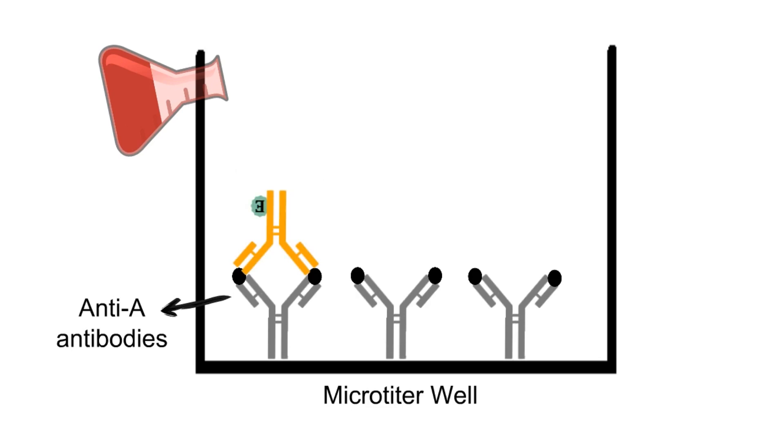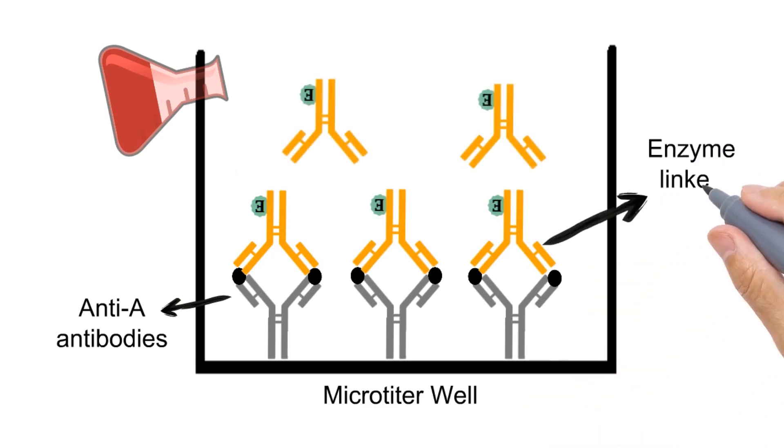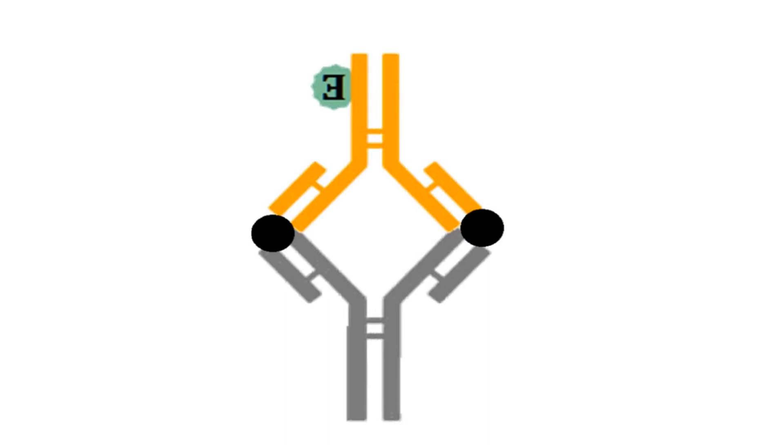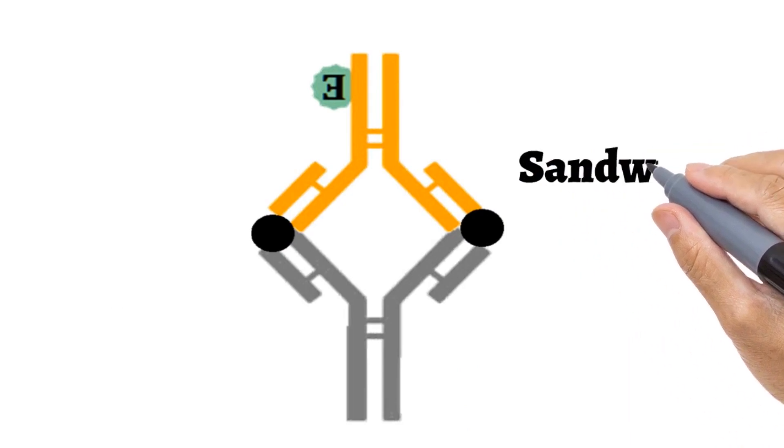After this, enzyme-linked anti-A antibodies are added to the well. These antibodies will bind to the antigens which are already bound to the coated antibodies. So as you can see, the antigen is sandwiched between two antibodies. That's why the technique is called Sandwich ELISA.